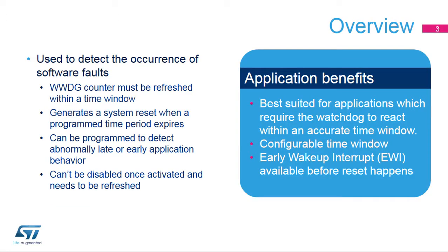The Window Watchdog is used to detect the occurrence of software faults. It can be programmed to detect abnormally late or early application behavior, and is best suited for applications required to react within an accurate timing window. Once enabled, it can only be disabled by a device reset.